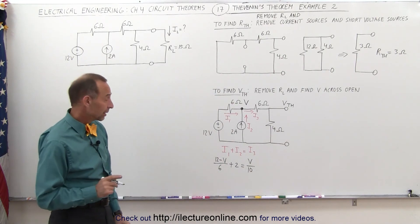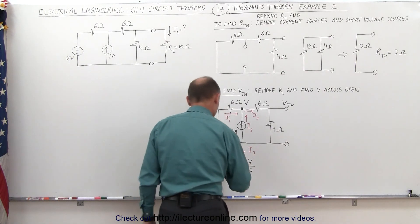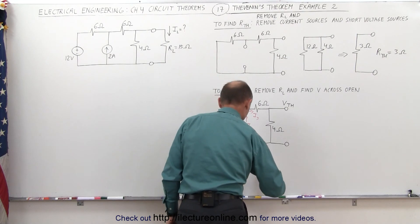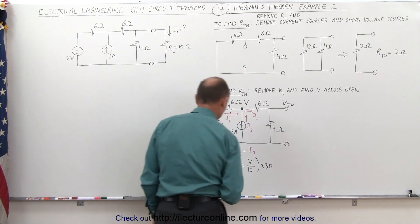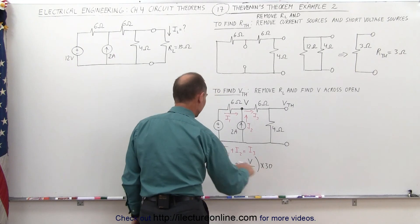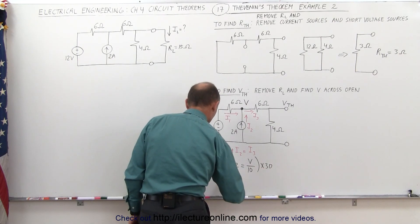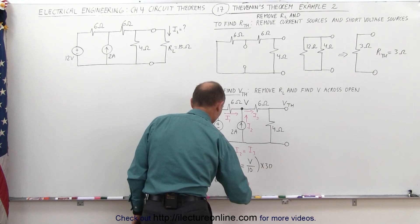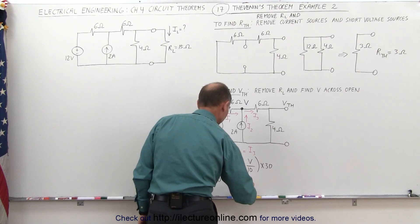To solve for V, I can multiply both sides of the equation by 30. Multiply that by 30. 6 goes into 30 five times, 5 times 12 is 60, minus 5 times V, plus 30 times 2 is 60,